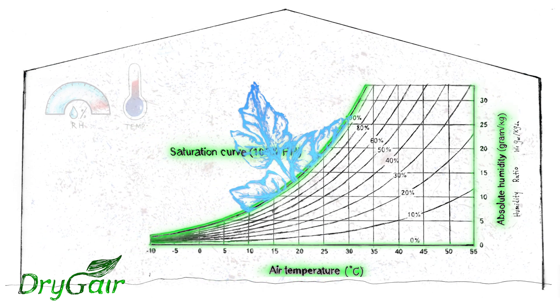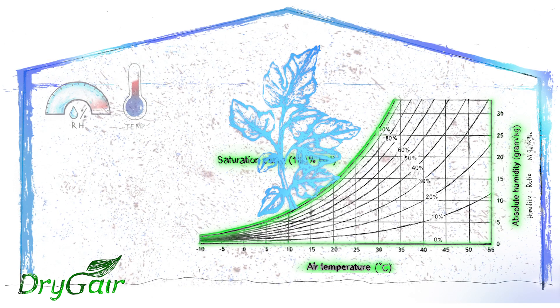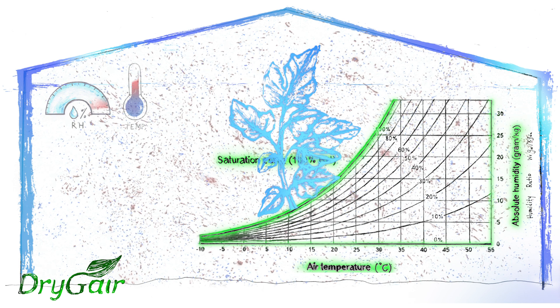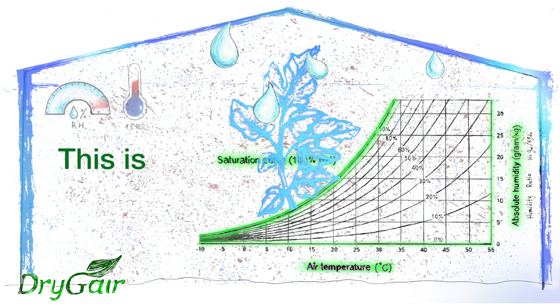When the air meets a cooler object, like a leaf or structural element, it may reach saturation, causing its water vapor to turn into liquid water. This is the dew point.